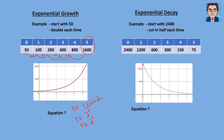What about the equation for exponential decay? Here we're dividing by 2 each time, and another way of writing that is we're multiplying by one-half each time. So we're starting with 2,400 and we're multiplying by one-half however many times that we do it — so we're multiplying it by half x number of times.